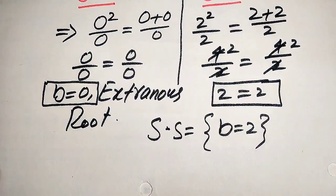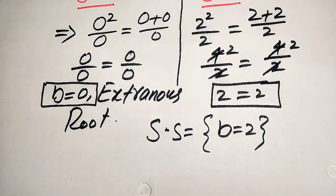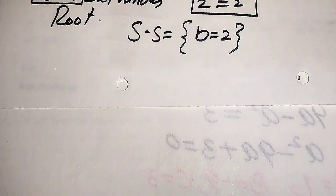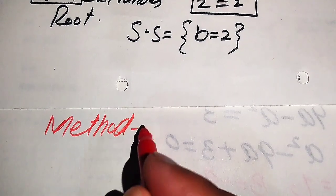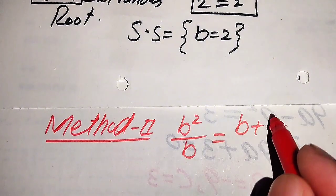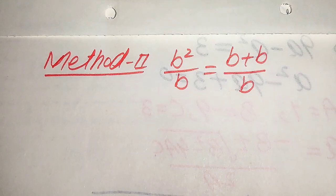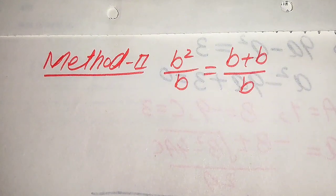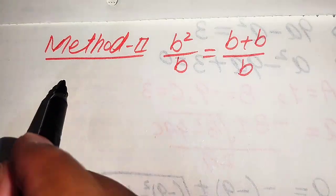This is the solution set from the first method: b equals 2. Now we solve the same problem using the second method. In the second method, I will show you a smarter technique where you can directly get the value of b without extensive calculation. We just use the laws of exponents.